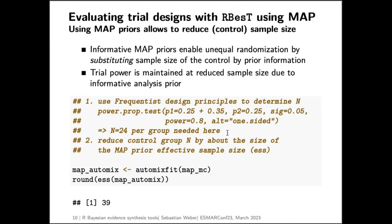For that, RBesT supports the concept of the effective sample size, which is a measure of informativeness of your prior. Summarizing the MCMC result from gMAP into parametric form and calculating the effective sample size is done in just two lines of code. We see that we have an effective sample size of 39 — much less than the 500+ patients we started with, but still substantial compared to needing only 24 patients in the control group with no informative prior.